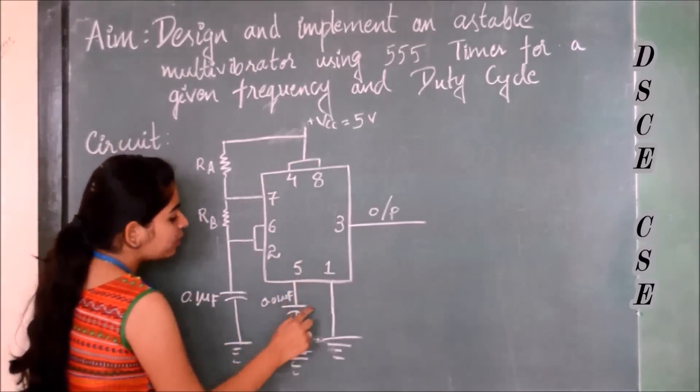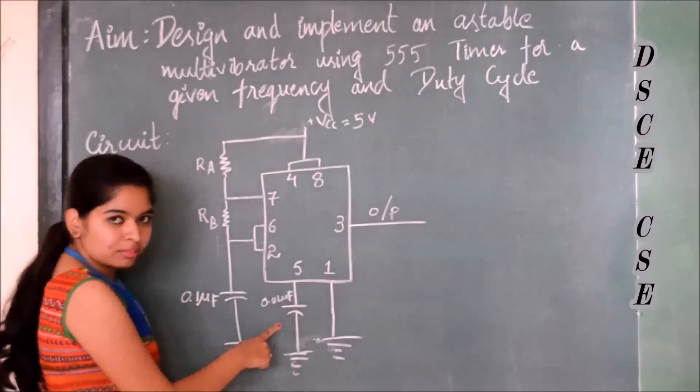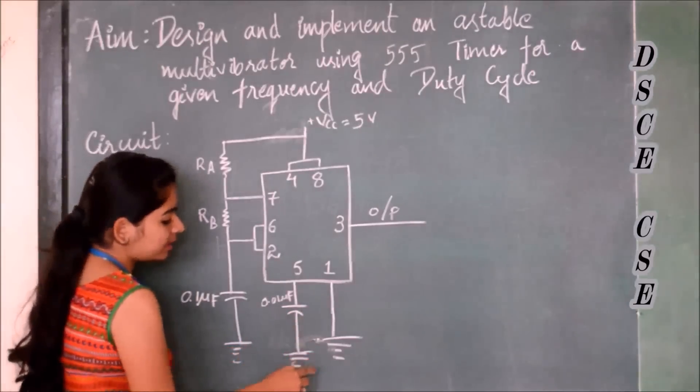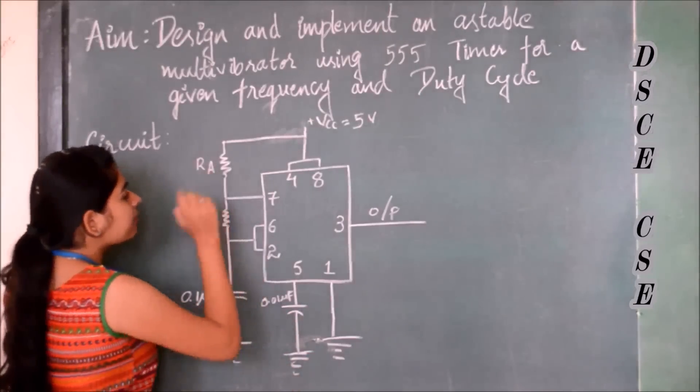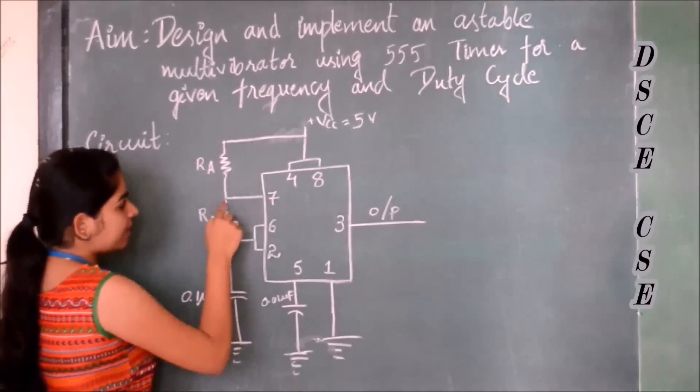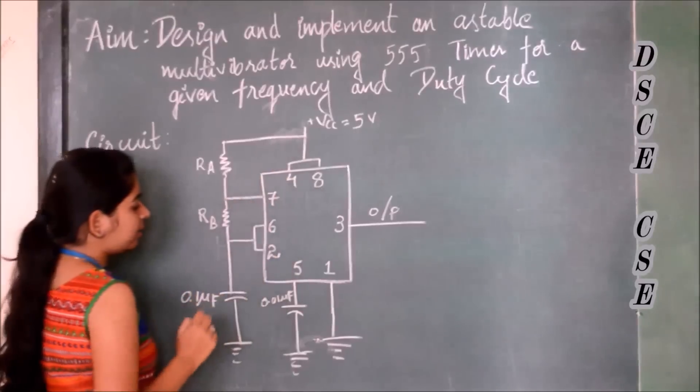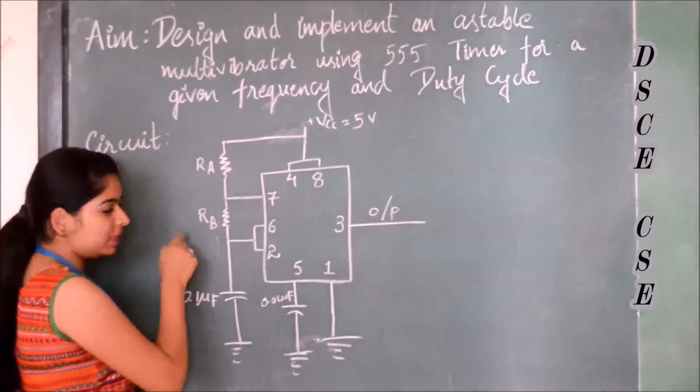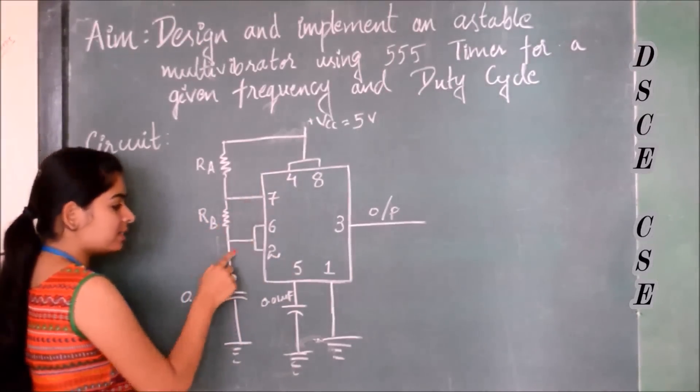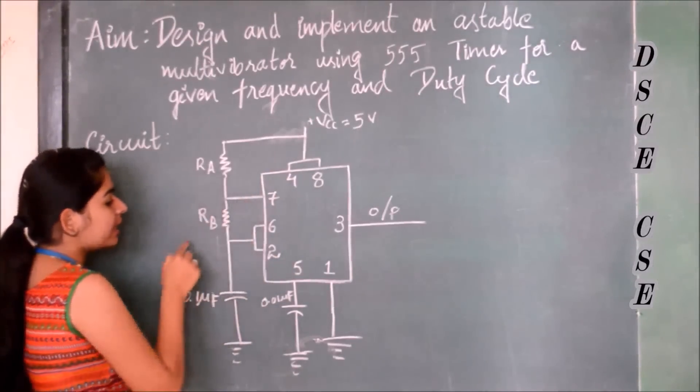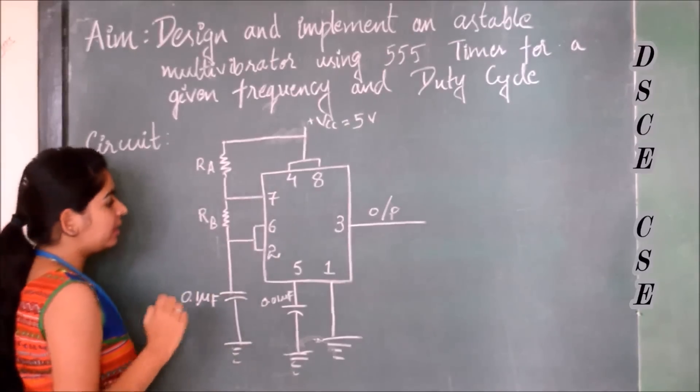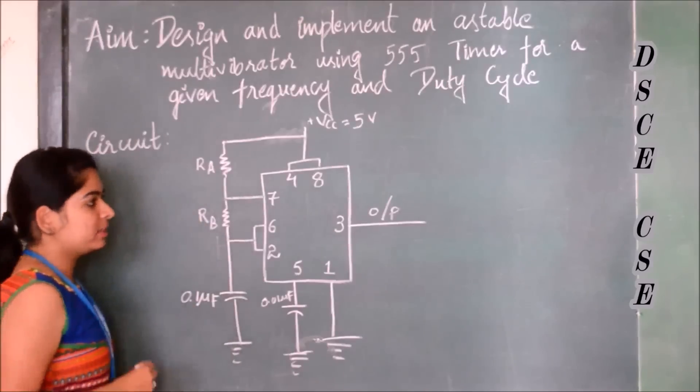Pin number 5 is connected to a capacitor of 0.01 microfarads and then it is connected to ground. We have a resistor RA between pin number 7 and pin number 8, and another resistor RB between pin number 7 and 6. The values of RA and RB have to be calculated. It depends upon the frequency and the duty cycle.